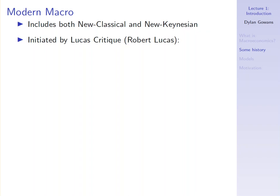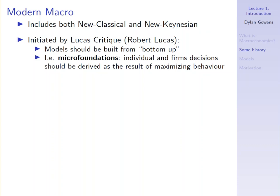This micro-founded section — new classical and new Keynesian — is what we refer to as modern macro. Modern macro includes both new classical and new Keynesian. What defines modern macro is these micro foundations, building these models from the ground up, from optimization at the consumer and firm level. This was initiated by Robert Lucas in what's referred to as the Lucas critique. The Lucas critique says that models should be built from the bottom up — they should have micro foundations — so individual and firm decisions should be derived as the result of maximizing behavior.